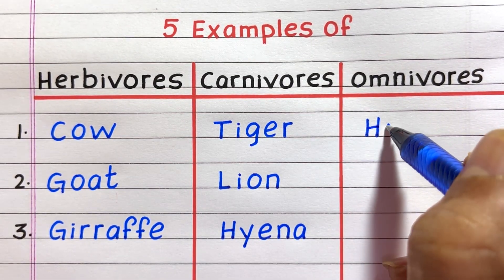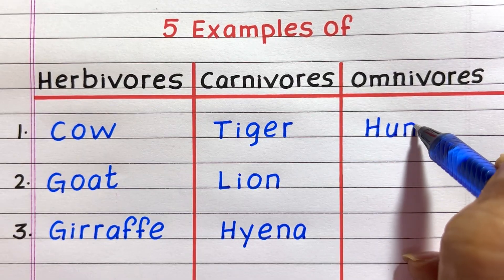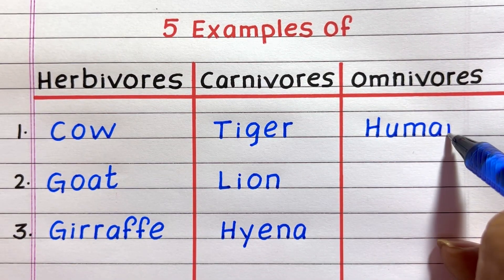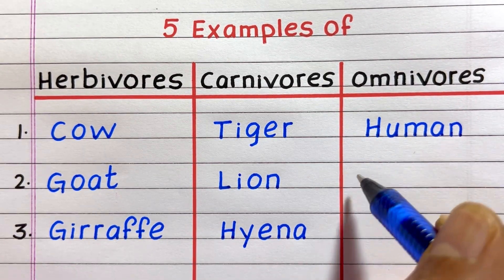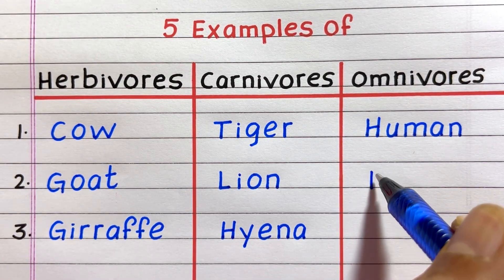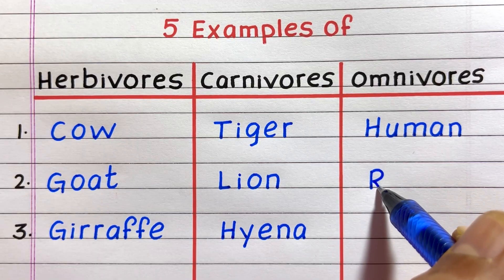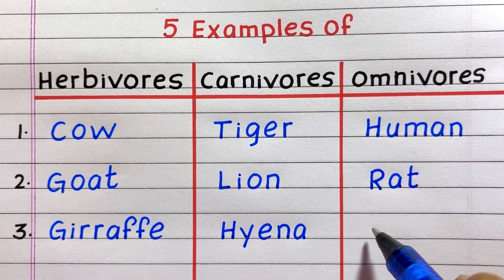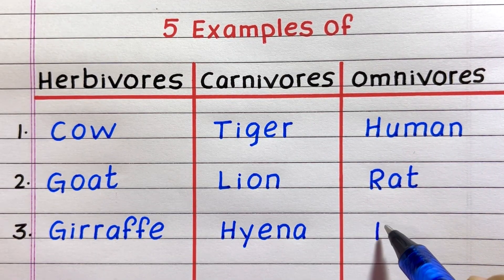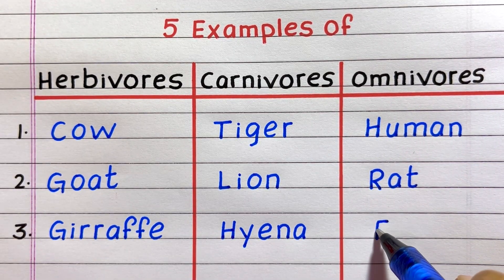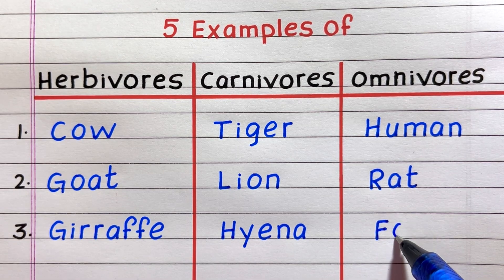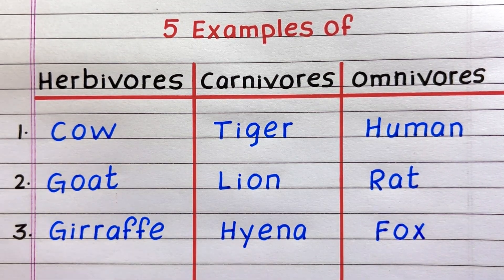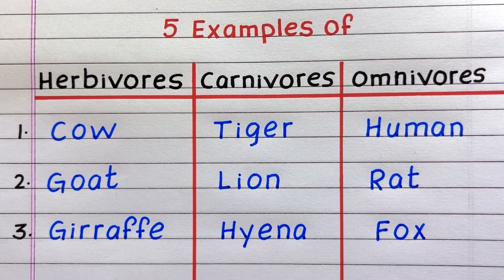The first example of an omnivore is human, second rat, third fox.